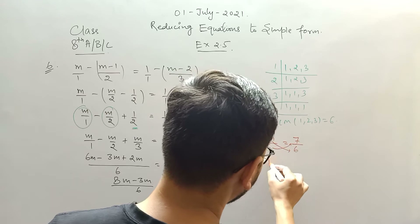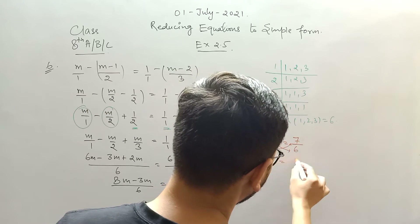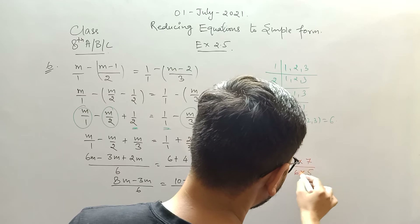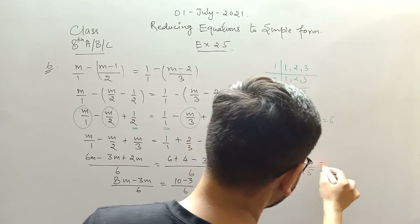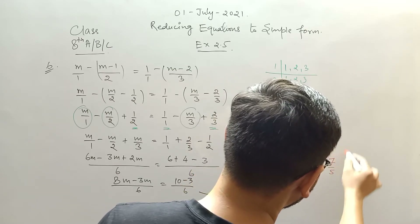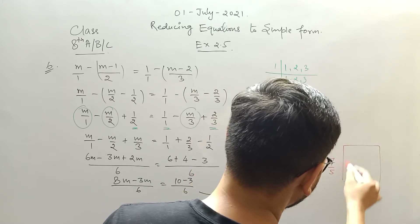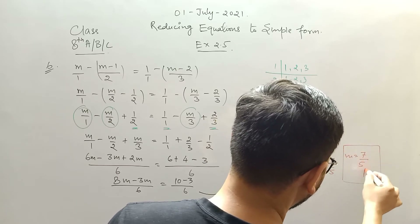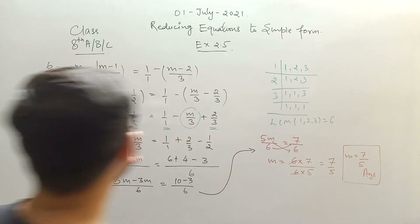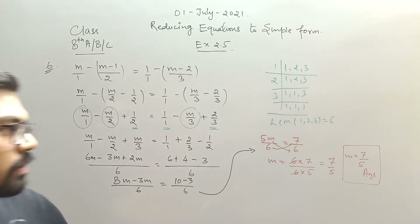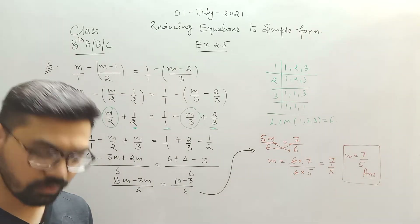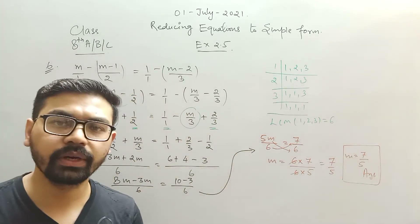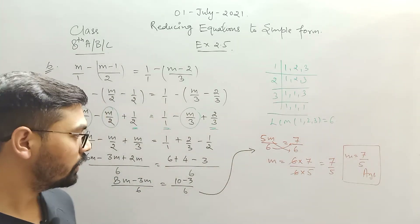So 8 minus 3 equals 5m divided by 6, and 10 minus 3 is 7 divided by 6. Just cross multiply these values and you will get the value of m. The answer is 7 upon 5 — or the value of m is 7 upon 5. So you have converted this equation to simplest form and solved for m. Note it down.